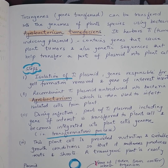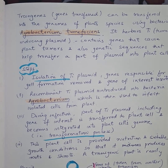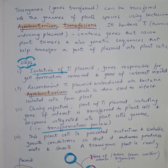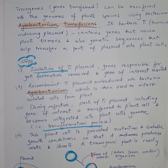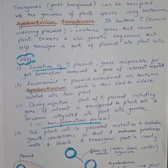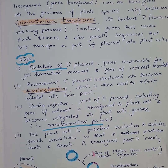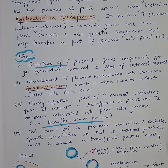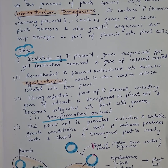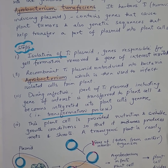Hello everyone, let's discuss how to create transgenic plants. Transgenes can be transferred into the genomes of plant species using the bacteria Agrobacterium tumefaciens. This bacteria has a tumor-inducing plasmid which contains genes that cause plant tumors, but also has genetic sequences that will help transfer this part of the plasmid into the plant cells.